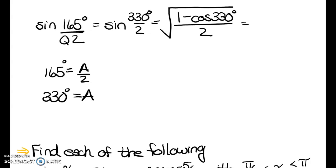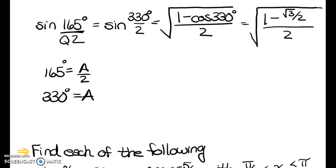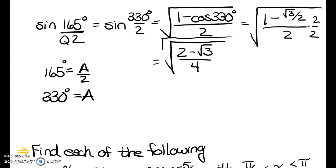The cosine of 330° — that's in quadrant 4, where cosine is positive, with a reference angle of 30°. So cos(330°) = √3/2. Multiplying by 2/2 under the radical to clear the complex fraction, I get √((2 − √3) / 4) as the final answer. This makes sense because 165° is in Q2, so sine should be positive.